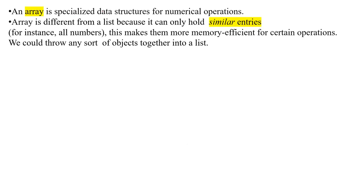An array is a specialized data structure for numerical operations. Array is different from a list because it can only hold similar objects, for example, all numbers.